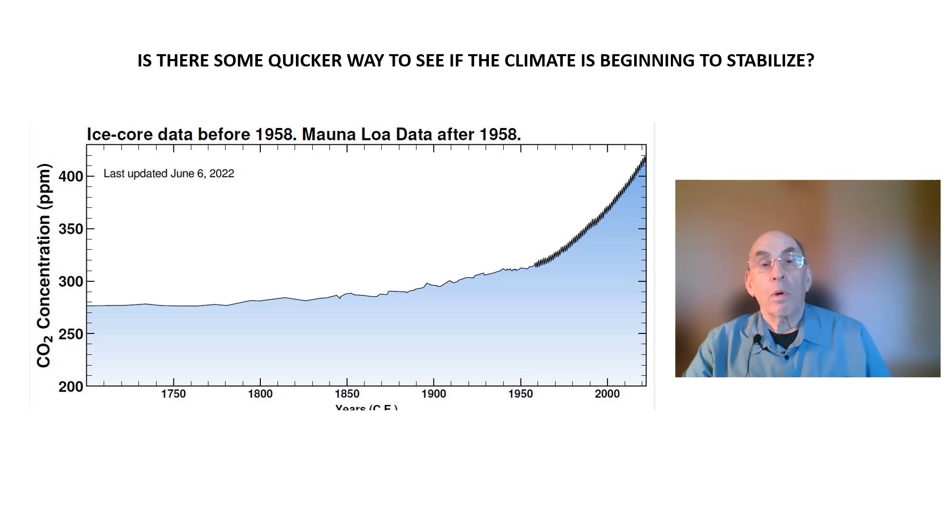In my view, the Keeling curve shown here that charts the CO2 level in the atmosphere is likely to provide the first indication of the climate beginning to stabilize. If the Keeling curve starts to flatten out, that most likely would be our first clue.